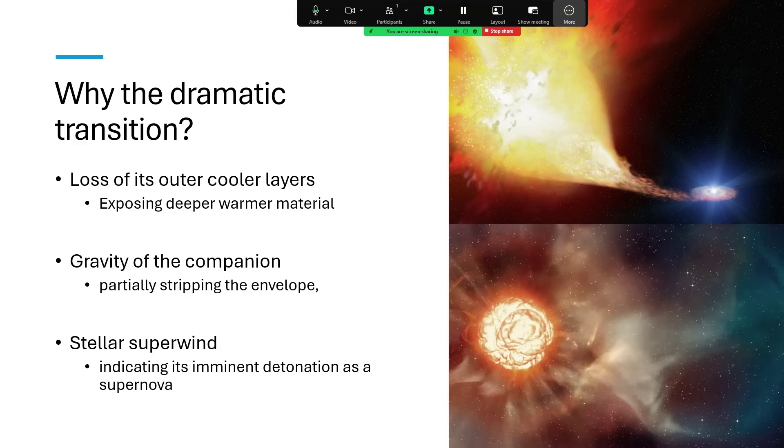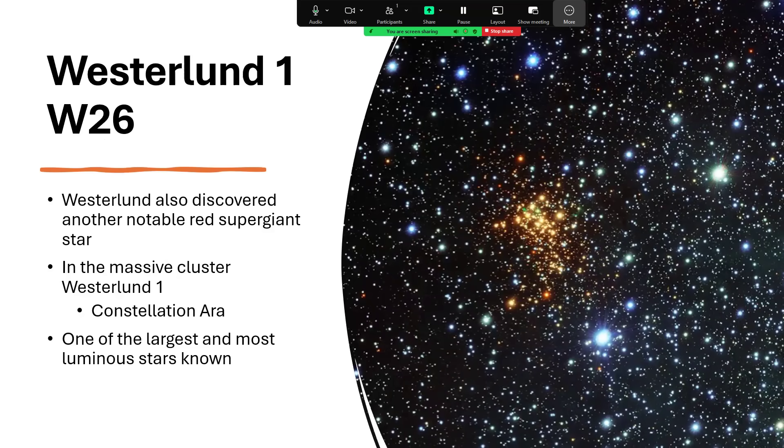So a fascinating object. And just to add something else into this talk, I also came across this guy, Westerland 1W26. And Westerland, the W of the initials of the original star, WOHG64, that we were talking about, was responsible for cataloguing a lot of these giant stars. And this one is in the constellation of Ara and is one of the largest and most luminous stars known. And you can see the cluster, Westerland 1W26, that contains W26 there in the picture. If you zoom in up into the inset in the top right, the little bars are marking where W26 is.